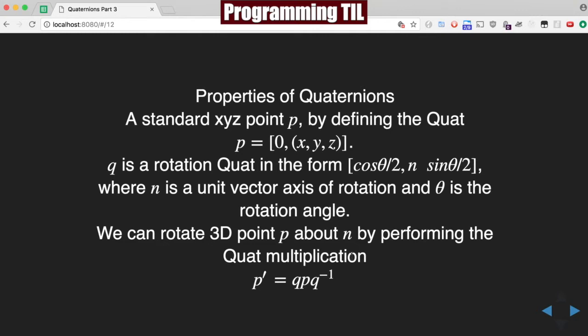So, we have a standard point, xyz point P, defined by the quaternion P0xyz. And Q is a rotation quaternion in the form of cosine theta over 2, n sine theta over 2. And N is a unit vector axis of rotation, and theta is the rotation angle. So, we can rotate around that 3D point P, and about, rotate 3D point P about N, by performing the quaternion multiplication, P prime is equal to QPQ inverse.